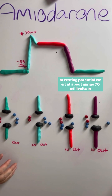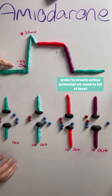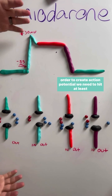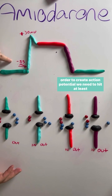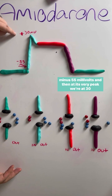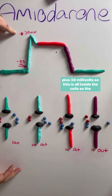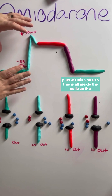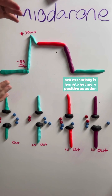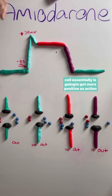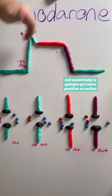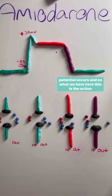At resting potential, we sit at about minus 70 millivolts. In order to create an action potential, we need to hit at least minus 55 millivolts. And then at this very peak, we're at plus 30 millivolts. So this is all inside the cell — the cell essentially is going to get more positive as action potential occurs.